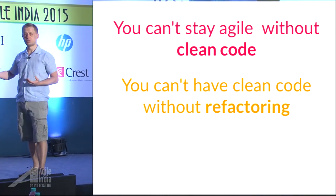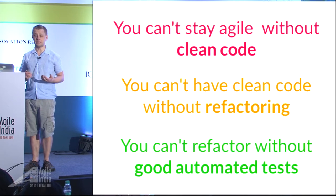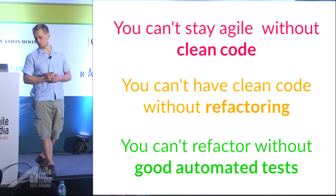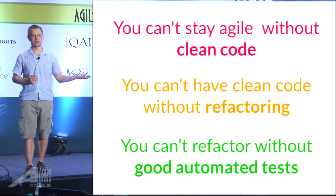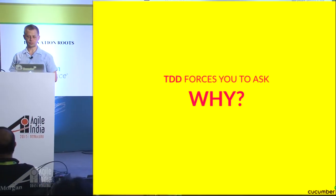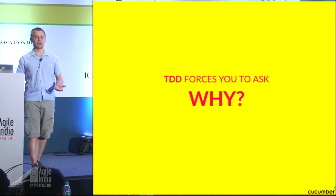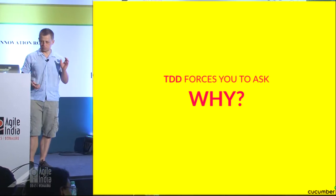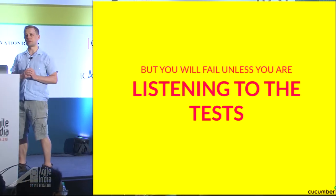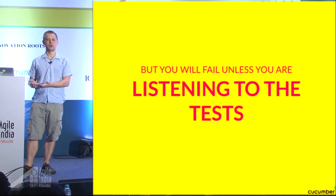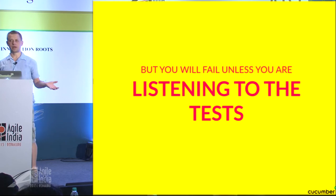You can't have clean code unless you do refactoring. And you can't refactor unless you have good automated tests — you need those warning lights to go off when your refactoring destroys something. TDD will eventually slow you down if you build lots of tests and don't listen to them. When they get slow, that's a clue that you need to change your architecture — make it more modular, maybe migrate from a monolith to microservices. You have to listen to those tests and keep them fast.